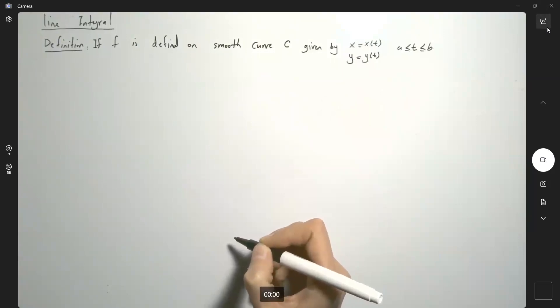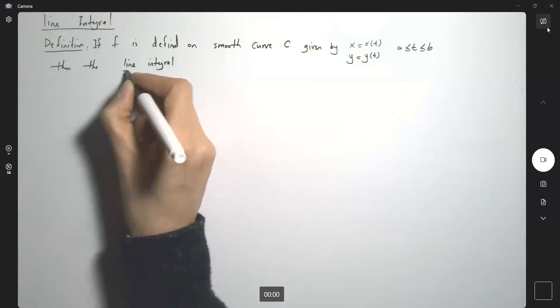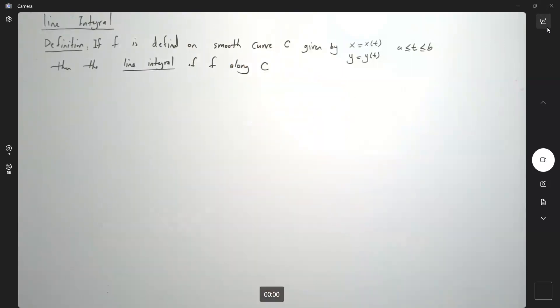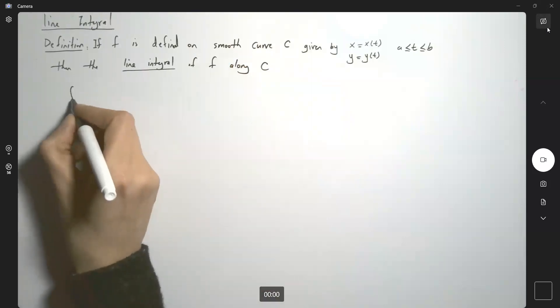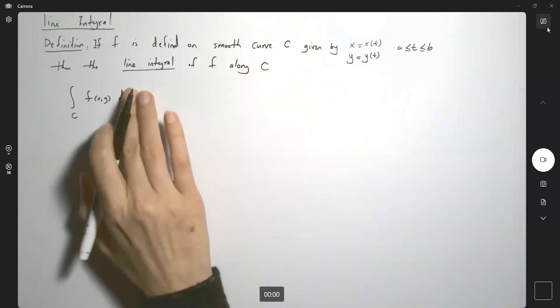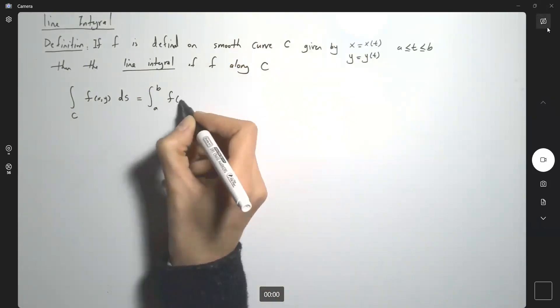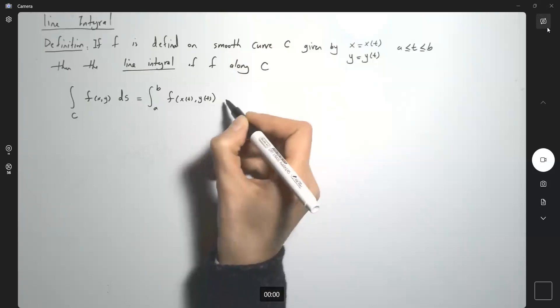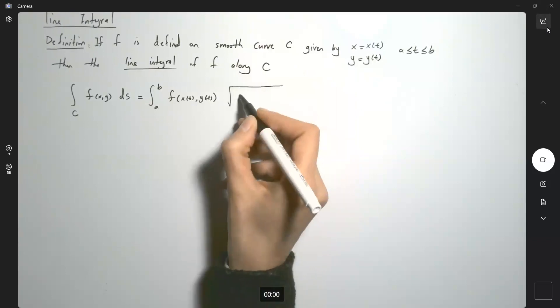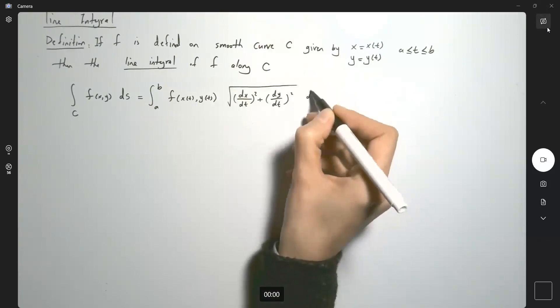Then the line integral of F along smooth curve C is defined as the integral of F(x,y) ds over curve C, which equals integral from a to b of F(x(t), y(t)) times the square root of (dx/dt)² plus (dy/dt)² dt.